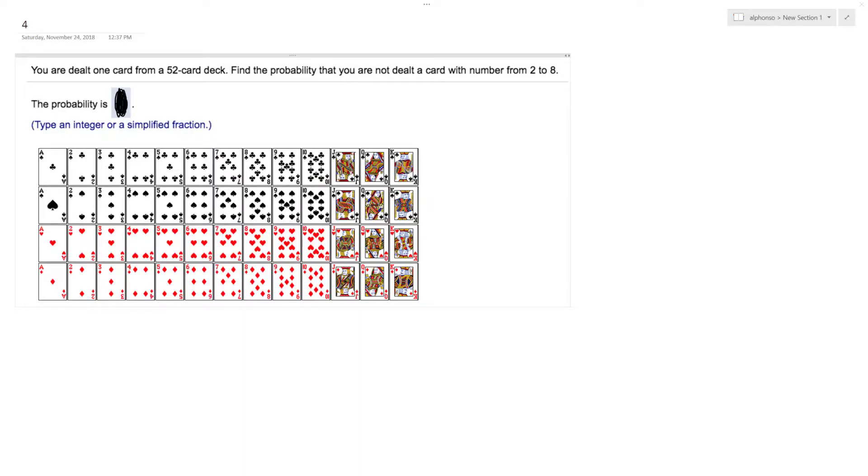Alright, so we're dealt one card from a deck of 52. Find the probability that you are not dealt a card with number 2 to 8.